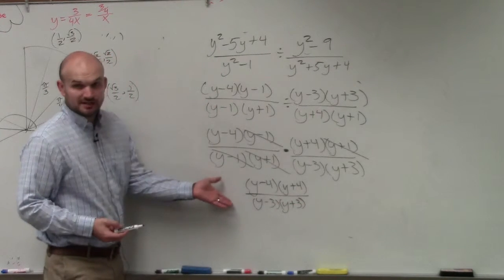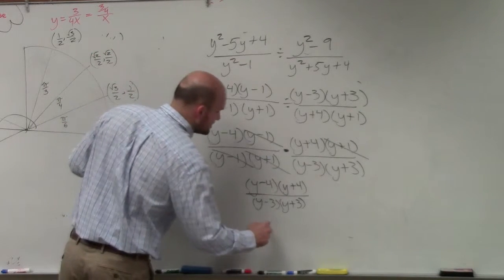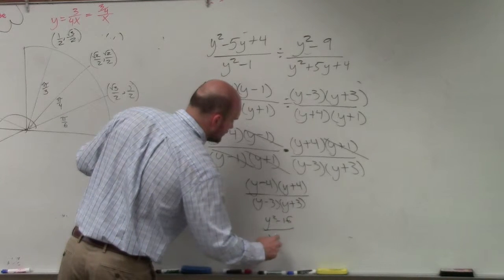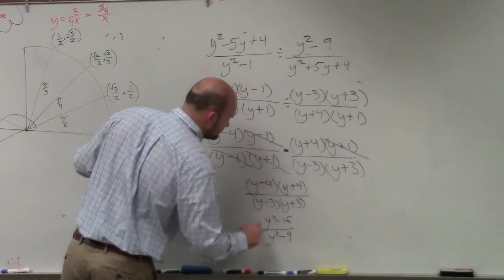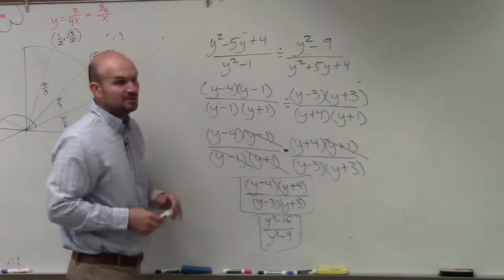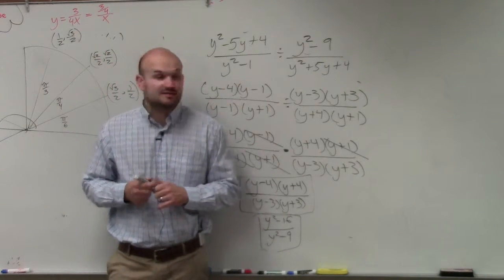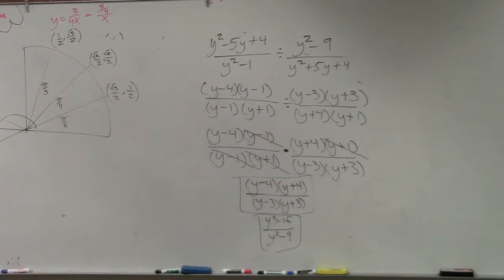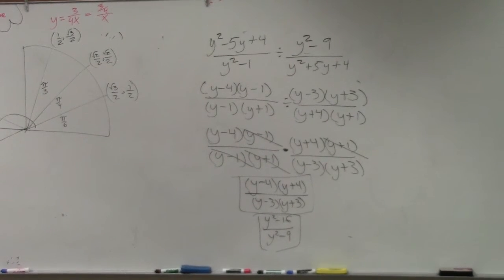So you can leave the answer in factored form, or you could distribute, which would give you the difference of two squares, which would be y squared minus 16 over y squared minus 9. So either way, either answer would be acceptable, and either answer you may see on the test. So I don't know what format it is, so just make sure you understand how both of those are correct. For your homework, I prefer to have it factored.